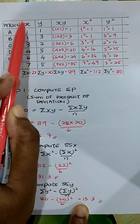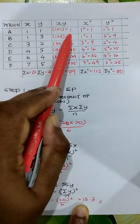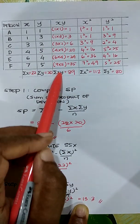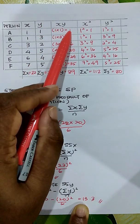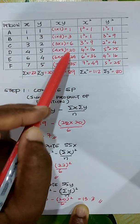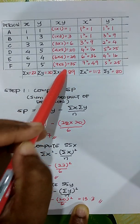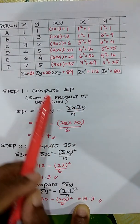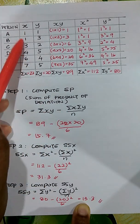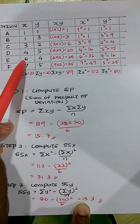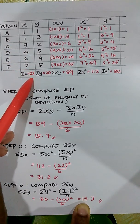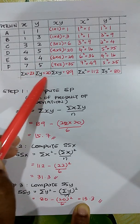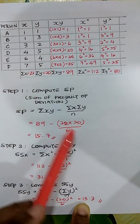To get sum of XY, multiply each X value by its corresponding Y value: 1×1=1, 1×3=3, 3×2=6, and so on. Adding them up: 1+3+6+20+24+35 gives sum of XY = 89. Sum of X is 1+1+3+4+6+7 = 22. Sum of Y is 1+3+2+5+4+5 = 20.